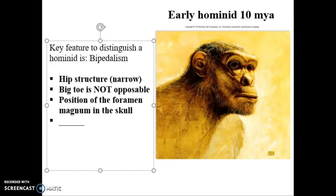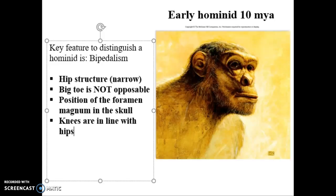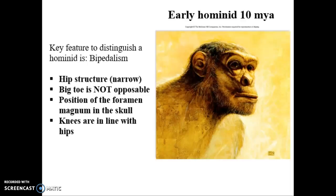So we've got hips, toes, skull, and knees. Look at your knees — they're in line with your hips. In bipedal primates and hominids, those knees are in line. If you look at chimps and gorillas, the knees are offset. These physical key features are what we apply to fossils to determine if they're hominid fossils versus ape fossils — do they go to the chimp evolutionary line or the ape evolutionary line? The anatomy is a huge feature telling us which side of the evolutionary tree a fossil belongs on.